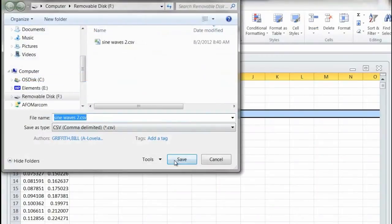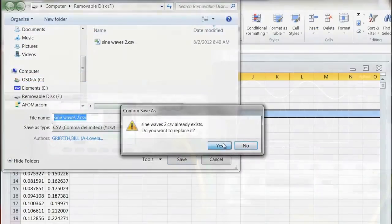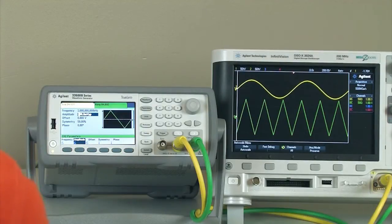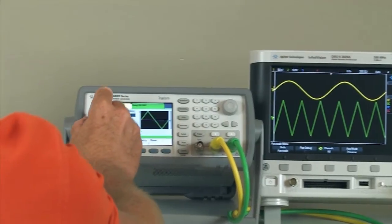So I'm going to save the Excel spreadsheet as a CSV file to USB stick, and then we can import the data from our USB stick. So I'll show you what that looks like.